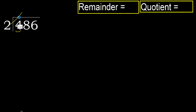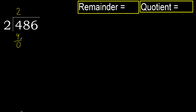6 is greater. Multiply by 2. 4 is not greater, okay. Subtract. 4 minus 4 equals 0.